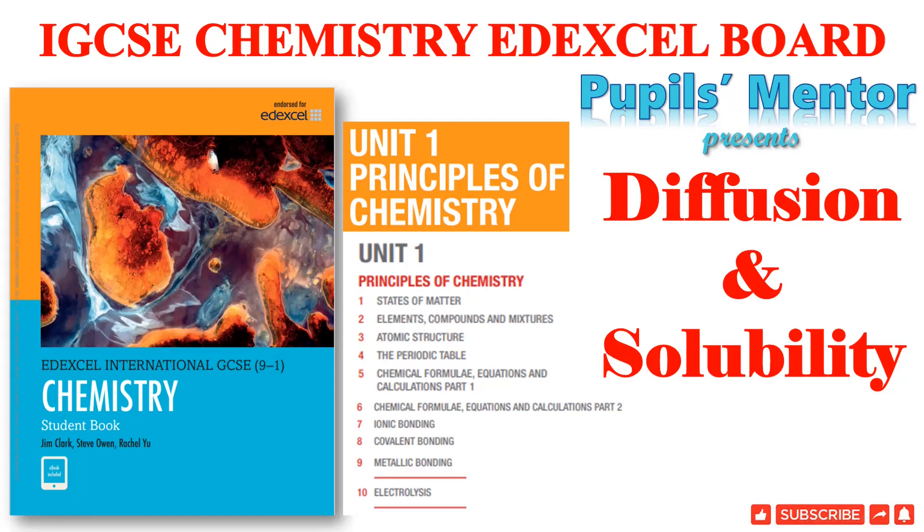Dear students, today we shall learn properties of states of matter, diffusion and solubility. It's article number 1 in unit number 1, Chemistry at Excel International GCSE. We shall answer the chapter questions number 4 to 6 given on page number 12 and 13.